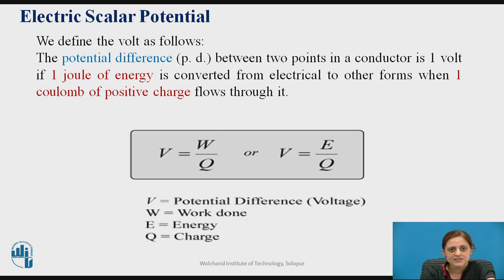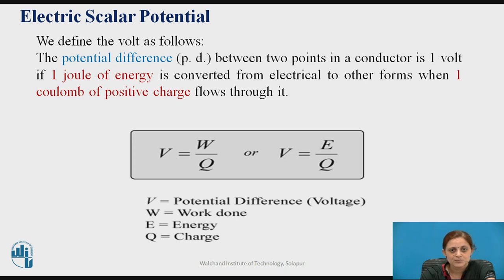Thus, you can define the electric scalar potential as follows: the potential difference between two points in a conductor is one volt if one joule of energy is converted from electrical to other forms when one coulomb of positive charge flows through it. Mathematically, it can be written as V equal to W upon Q, or V equal to E upon Q, where W is the work done and E is energy.